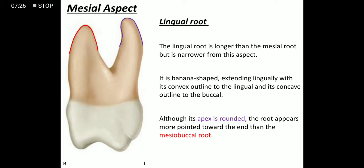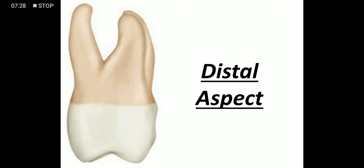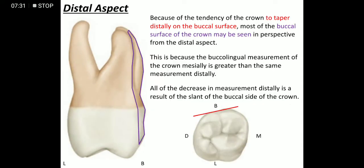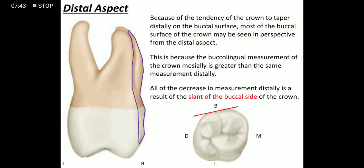Distal aspect: from the distal aspect we can see most of the buccal side. This is because of the tapering on the buccal side — the mesial side is larger than the distal side — which gives a slant on the buccal side, allowing more of the buccal surface to be seen from the distal aspect.